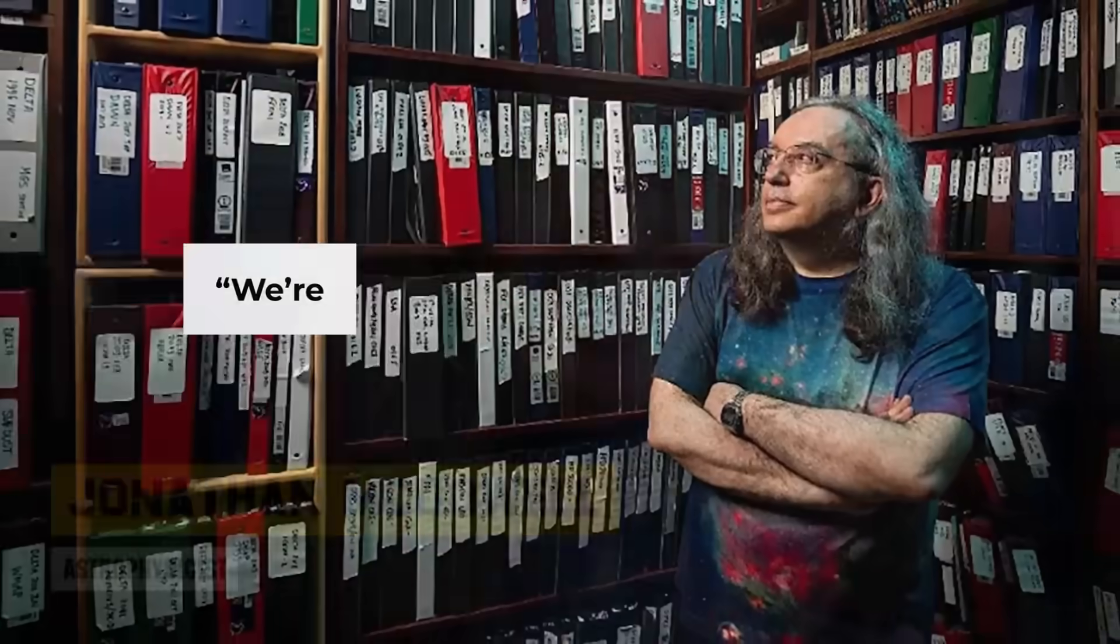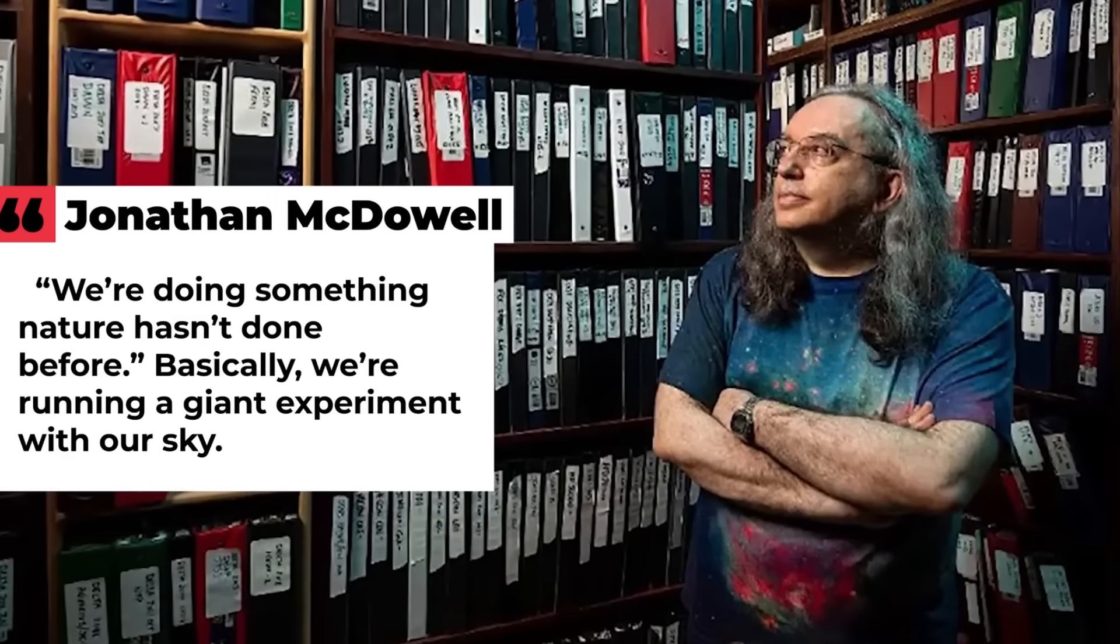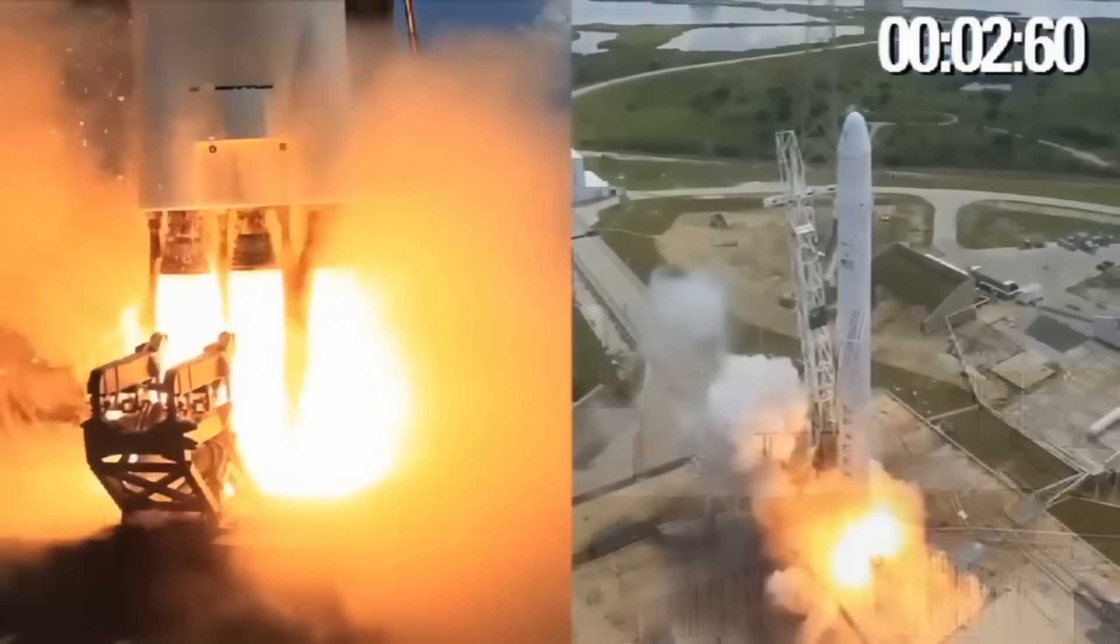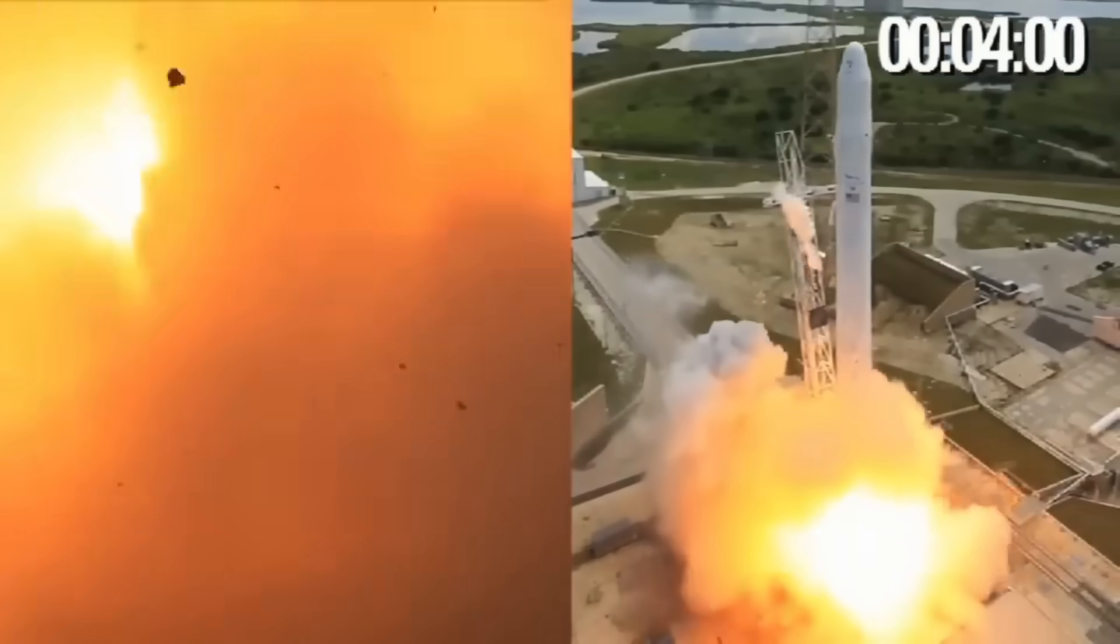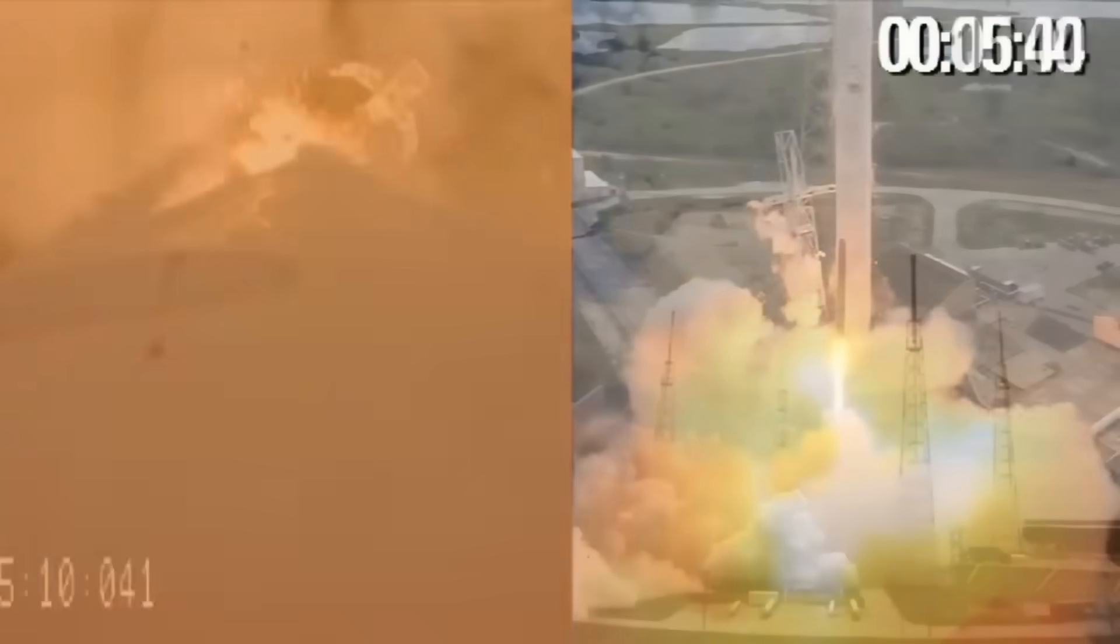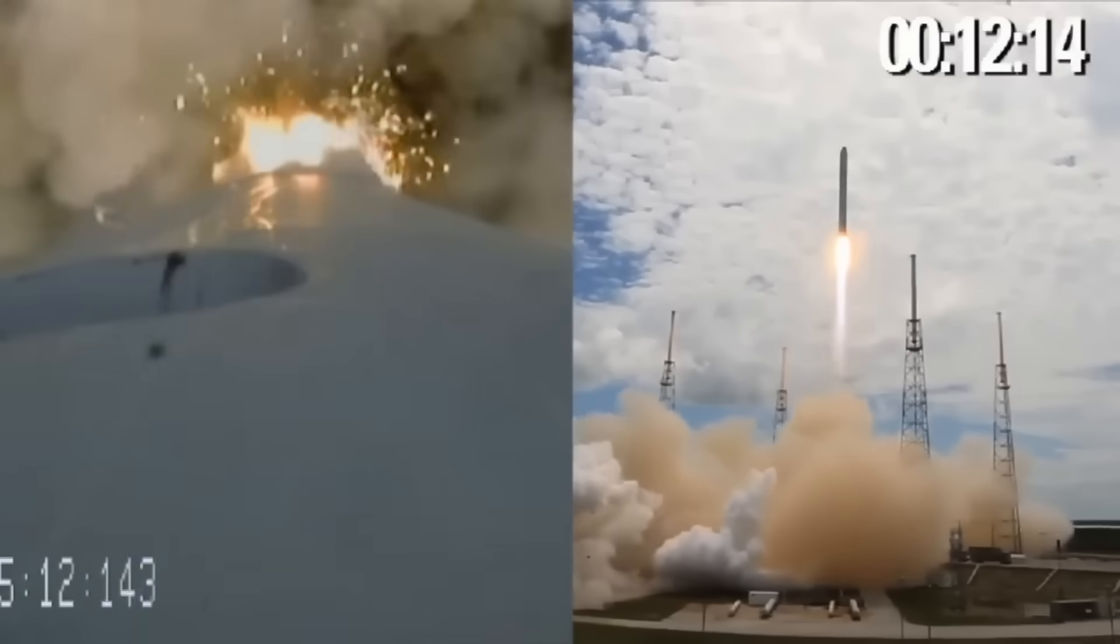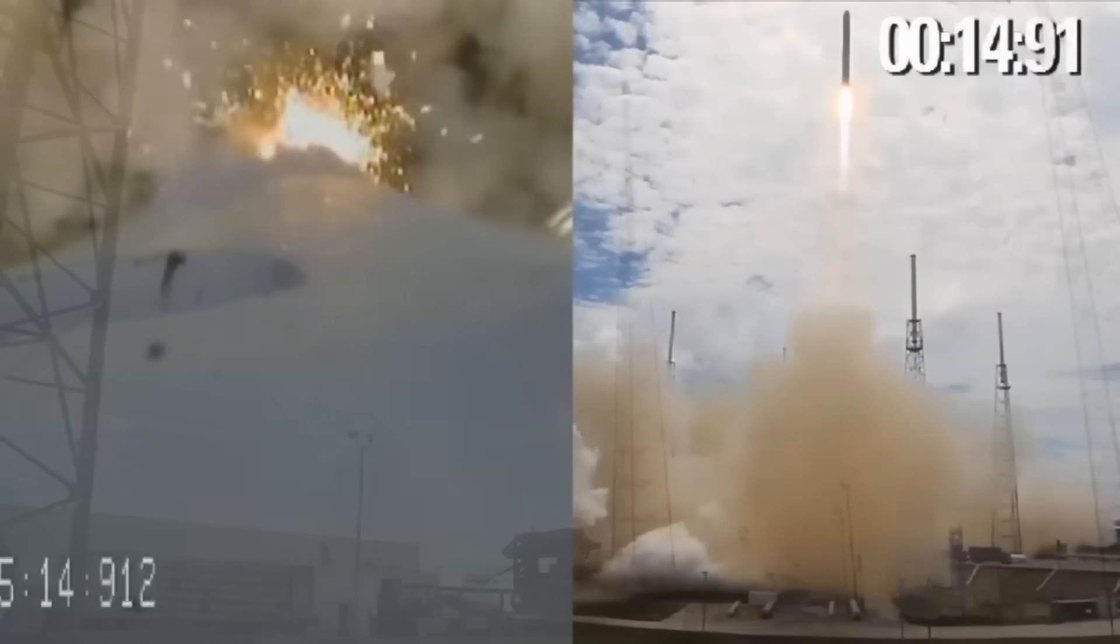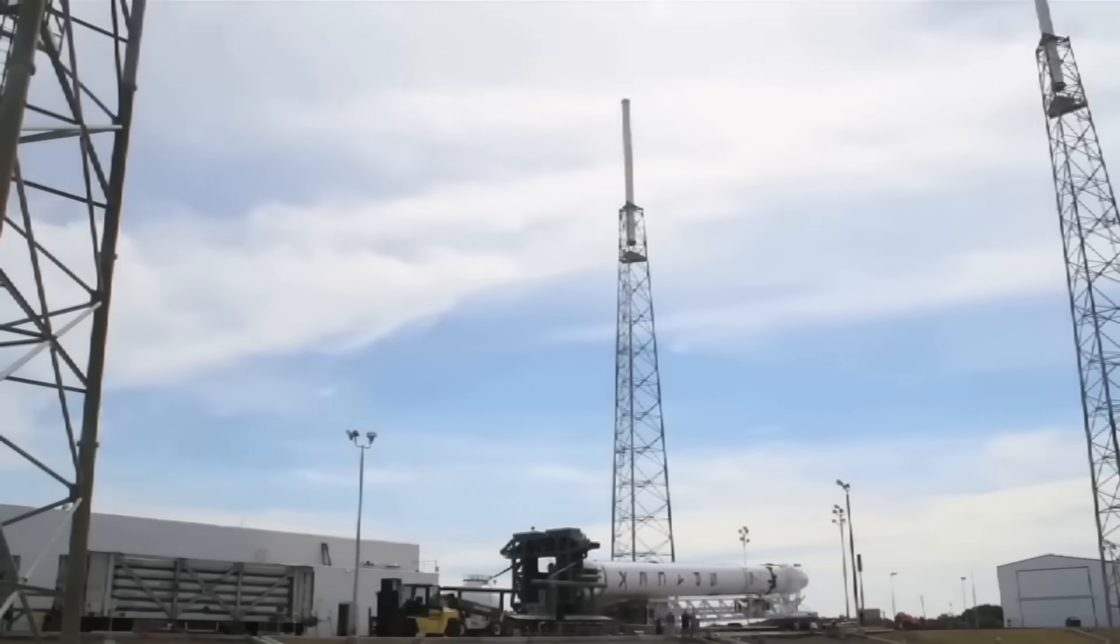A well-known space scientist, Jonathan McDowell, said that we are doing something that nature has never done before. In his words, it is like performing a big experiment in the sky. SpaceX already has permission to launch up to 12,000 satellites and has plans to increase that number to 42,000. This large scale has made many scientists very worried.